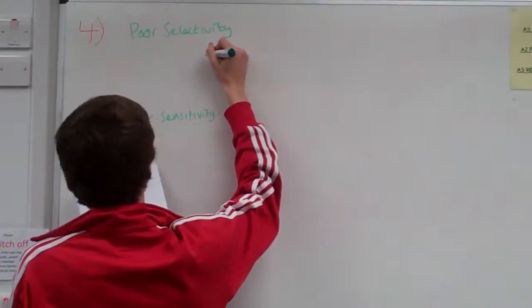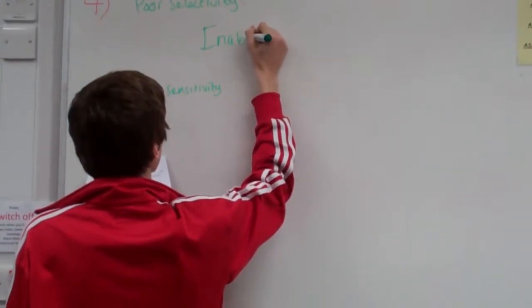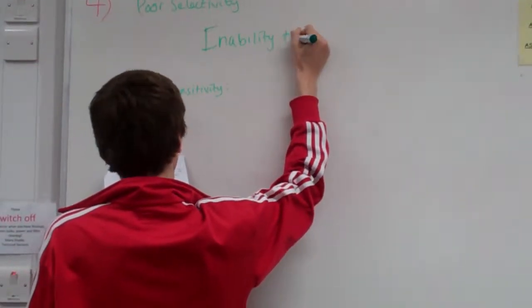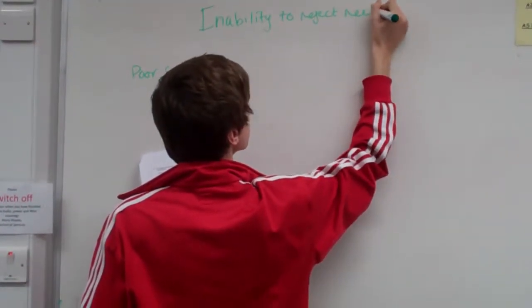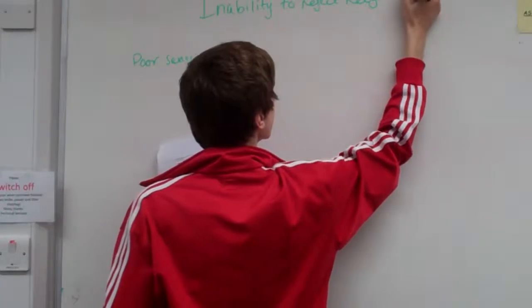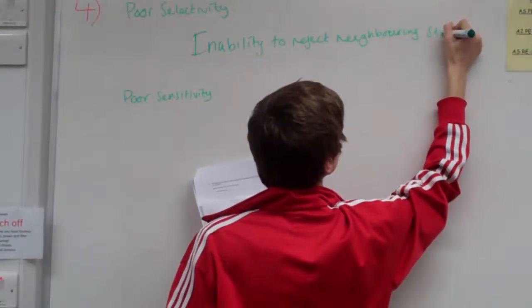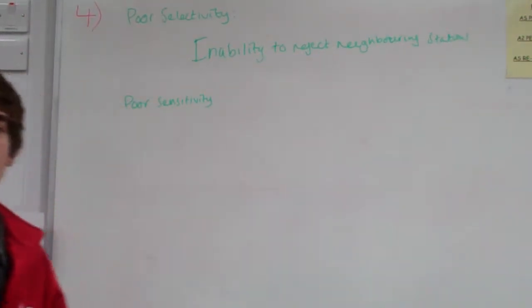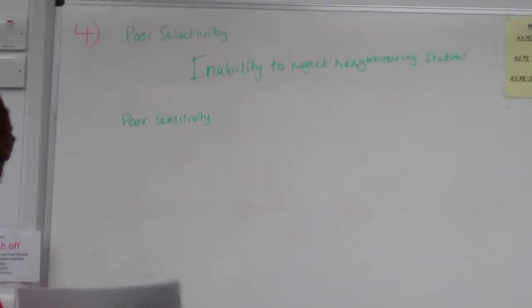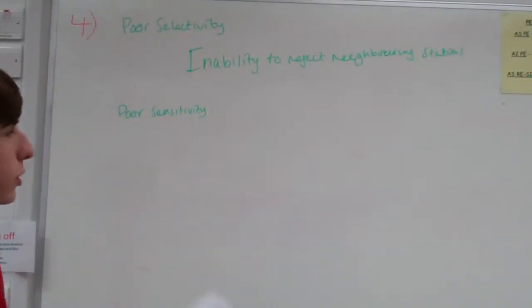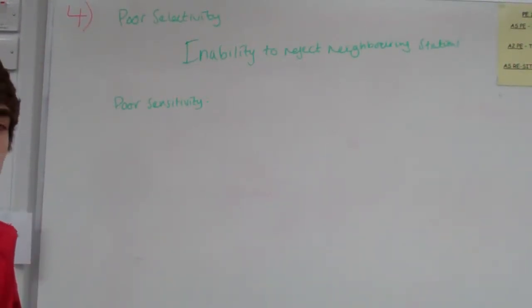So, poor selectivity - just remember this term - it's the inability to reject neighbouring stations. This means when you have a frequency coming in, with other stations, other radio frequencies quite close by to it, this receiver is unable to specifically target that one radio station it wants without getting interference from the other stations.